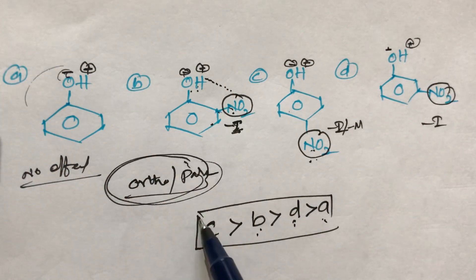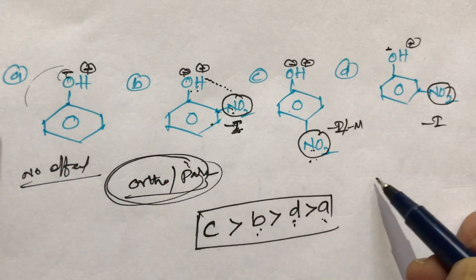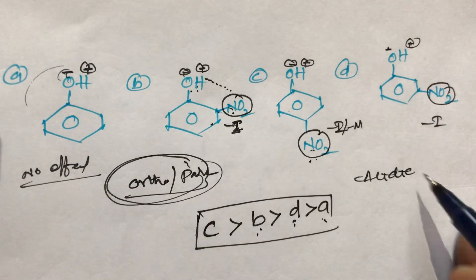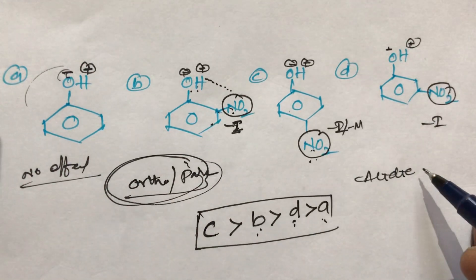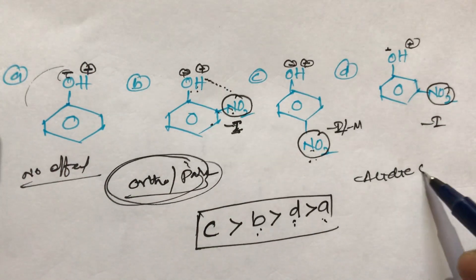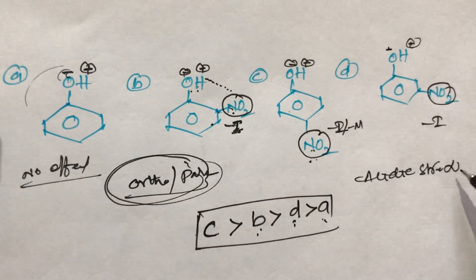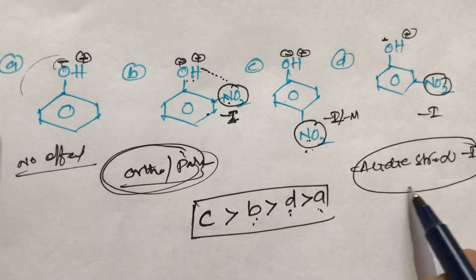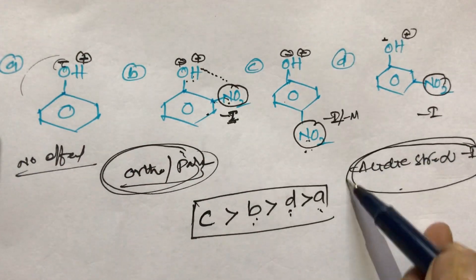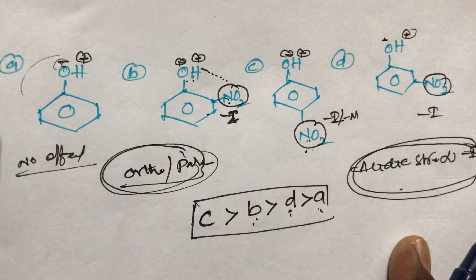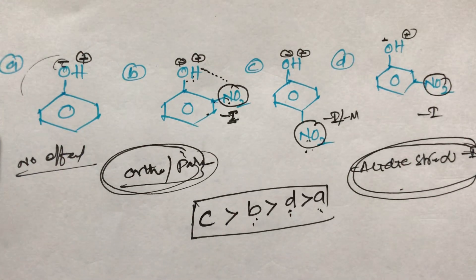One more important point: acidic strength is directly proportional to the -I group or -M group. So the simple trick is — acidic strength is directly proportional to the -I group or -M group. This is the key rule, students.